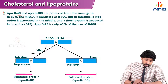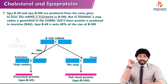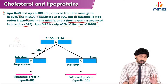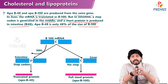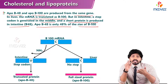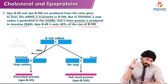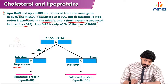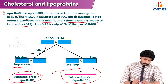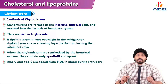ApoB48 and ApoB100 are produced from the same gene. The mRNA is transcribed as B100 gene mRNA in the liver, which produces the complete full-length ApoB100 protein. However, in the intestine, a stop codon is introduced in the middle of translation, so a shorter protein — ApoB48 — is produced instead. ApoB48 is only 48% the size of B100. So both B100 and B48 are produced from the same gene, but in the intestine, a stop codon generates the truncated B48 form. That is all about lipoprotein classification, their characteristics, and how these apo-proteins are produced. Thanks for watching.